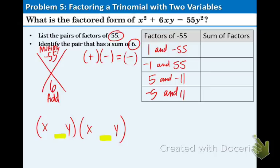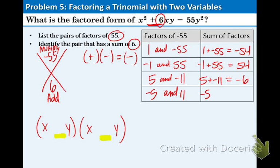Now we want to add those and hope to get positive 6. 1 plus negative 55 equals negative 54. That does not work. Negative 1 plus 55 equals positive 54. That is not 6. 5 plus a negative 11 is negative 6. That's not a positive 6. Look right here, it's a positive 6. And lastly negative 5 plus 11 is positive 6. We got our winner.